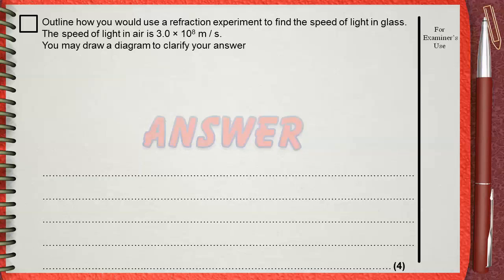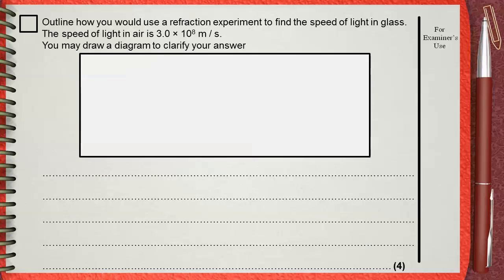Before we draw a diagram or write anything, let's first explain the experiment. In this experiment we need a large sheet of paper. Then get a rectangular glass block, put it in the middle of the paper.